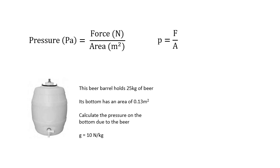Here's a worked example. This beer barrel holds 25 kilograms of beer and its bottom has an area of 0.13 metres squared. Calculate the pressure on the bottom of the barrel due to the beer, taking g as 10. Pressure is force over area, so P = F/A. The pressure is the weight of the beer: 25 × 10, divided by 0.13, which gives 1923 pascals or 1.923 kilopascals.